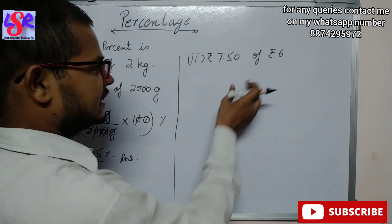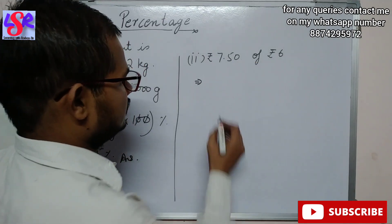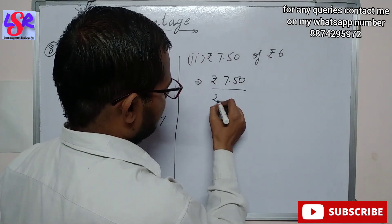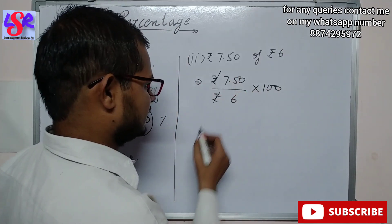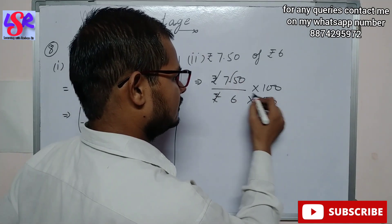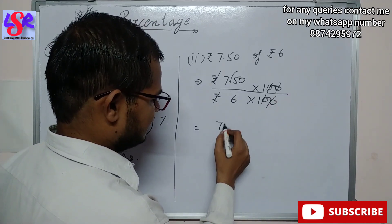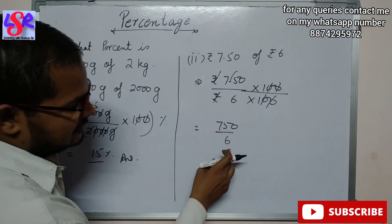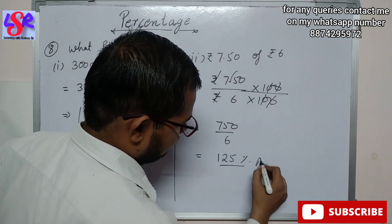Let us also see the second part: what percent is rupees 7.50 of rupees 6? This can be written as 7.50 upon 6 into 100. The rupee signs cancel, and removing the decimal gives 750 upon 600. This simplifies: 750 divided by 6 gives 125% as the answer.